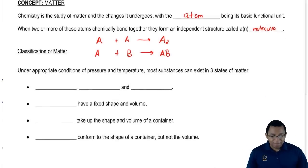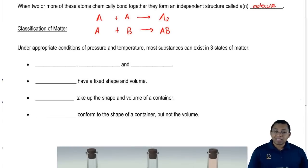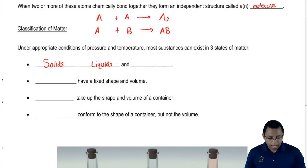We're going to classify the different types, different states of matter. Under appropriate conditions of temperature and pressure, matter can exist in three different states. We know what these are: they're solids, liquids, and gases.